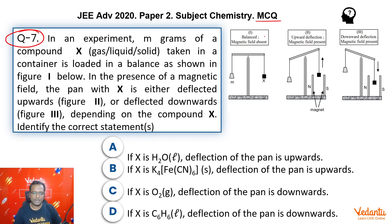Now this is a multiple correct type question. He says we have m grams of a compound X and we are trying to weigh it in a balance as shown in figure I below. He says we are measuring it in absence of magnetic field, in presence of magnetic field, and it is observed in absence of magnetic field it is perfectly balanced.